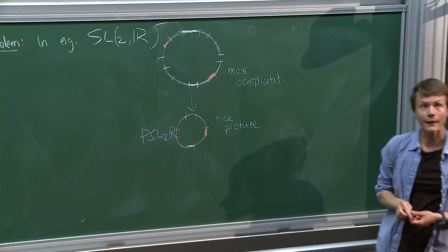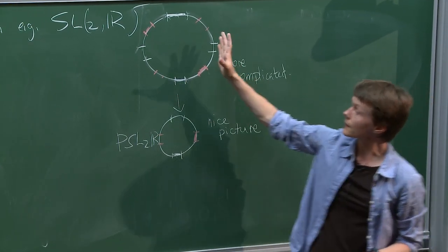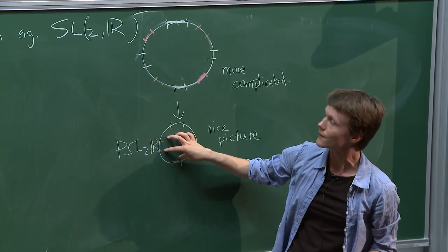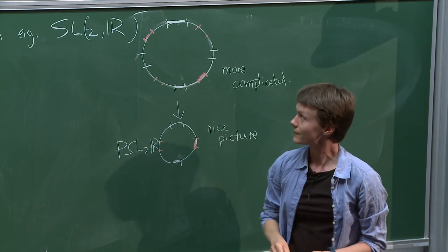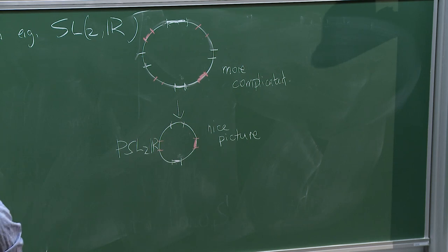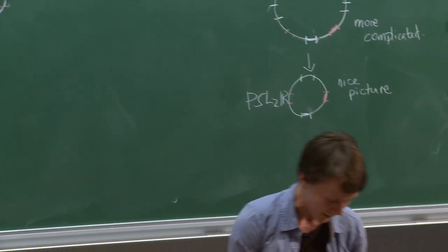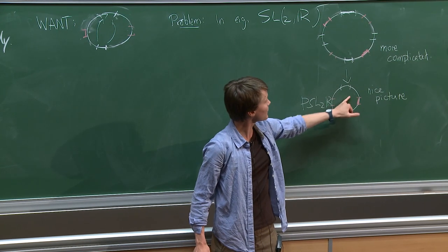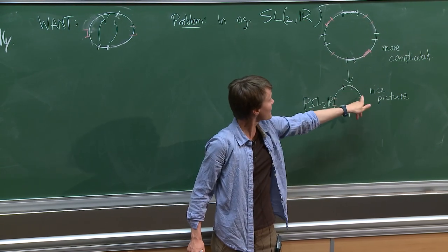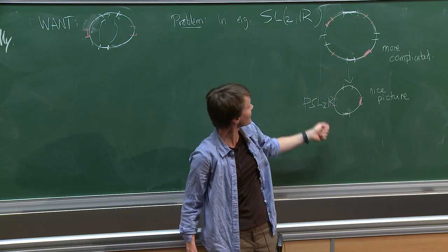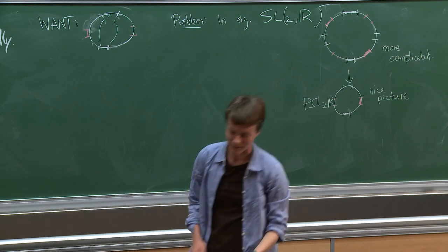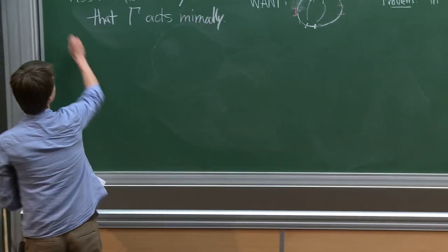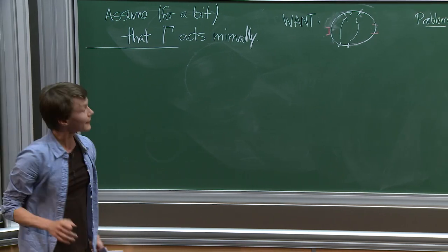In PSL₂(ℝ) acting by Möbius transformations, this function φ is the identity — any interval can be contracted arbitrarily. The claim is that in general φ is a finite-order homeomorphism commuting with the group action: φ(gx) = g·φ(x). The outline of the proof: first detect if there was a covering map (i.e., whether φ has finite order > 1), and if so pass to the quotient. Once φ is the identity, you can run the ping-pong argument to find intervals in exactly the configuration needed to produce a free group.